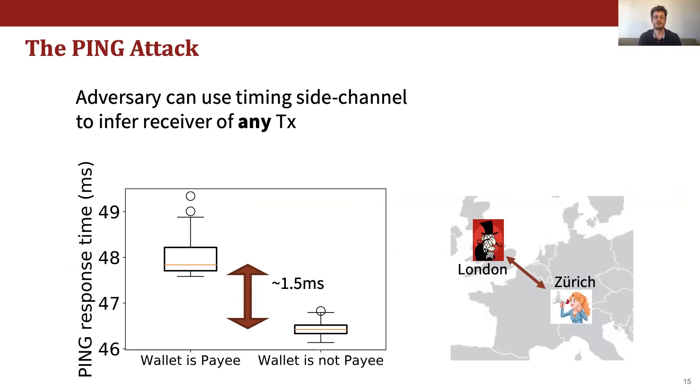This timing side channel is large enough to be reliably observed over the internet. We found that when the attacker is in London and Alice is in Zurich, the attacker could perfectly distinguish transactions that pay Alice from those that don't.